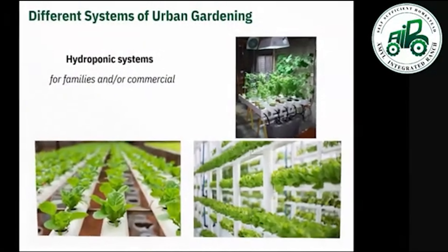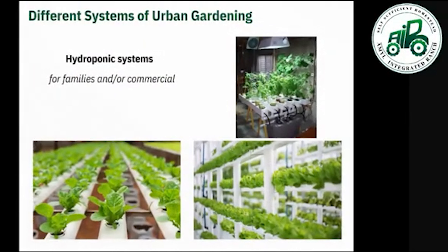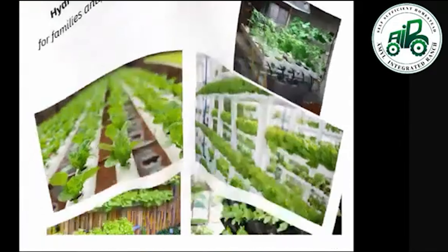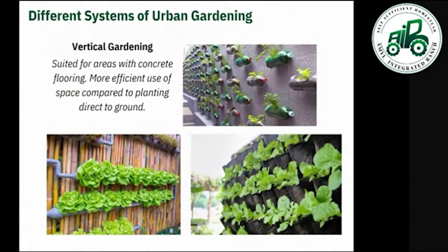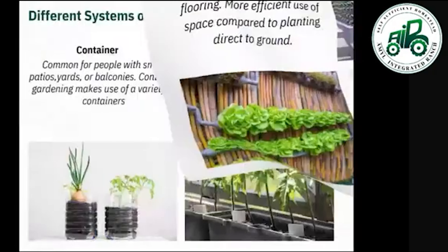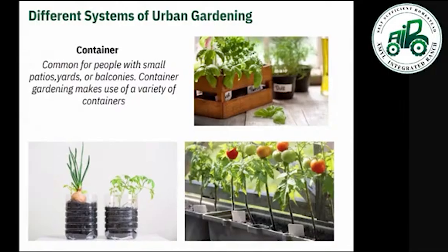Next is the hydroponic system, which can be for families or for commercial use. Vertical gardening is suited for areas with concrete flooring and is a more efficient use of space compared to planting directly in the ground. Container gardening is common for people with small patios, yards, or balconies — it makes use of a variety of containers such as empty plastic bottles or unused boxes.